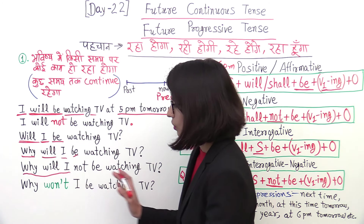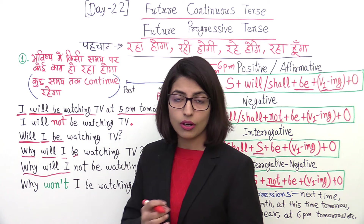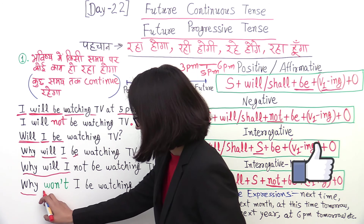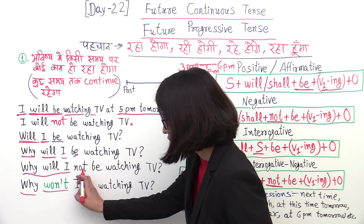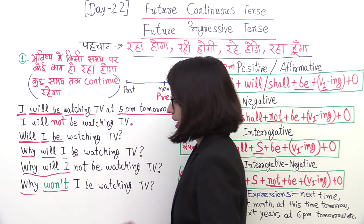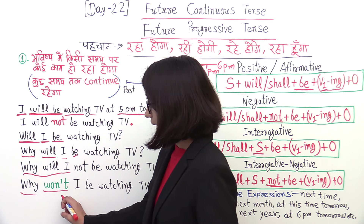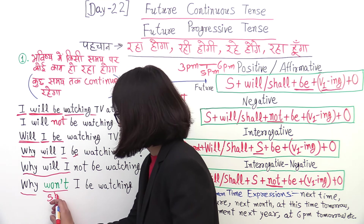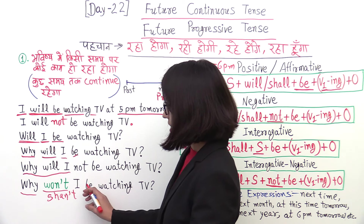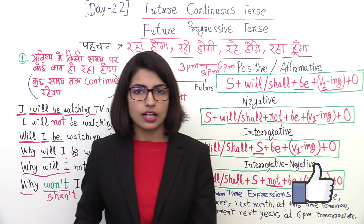Now let me tell you about contractions. 'Will not' becomes 'won't'. So: Won't I be watching TV? Why won't I be watching TV? If we use 'shall', then 'shall not' becomes 'shan't' — spelled S-H-A-N apostrophe T. So: Why shan't I be watching TV? There are two pronunciations: 'shant' or 'shan't'.